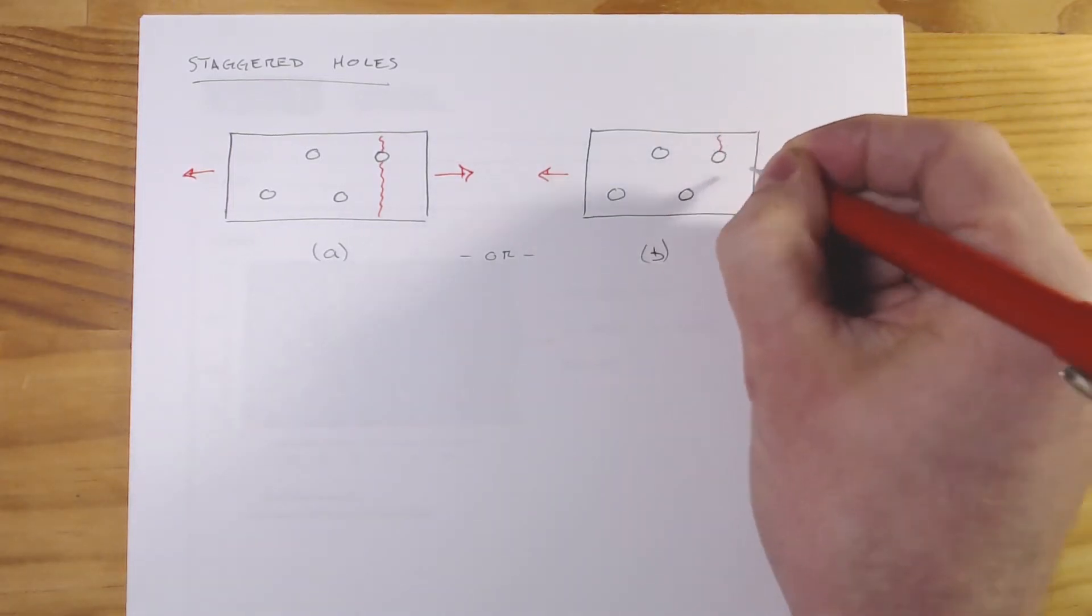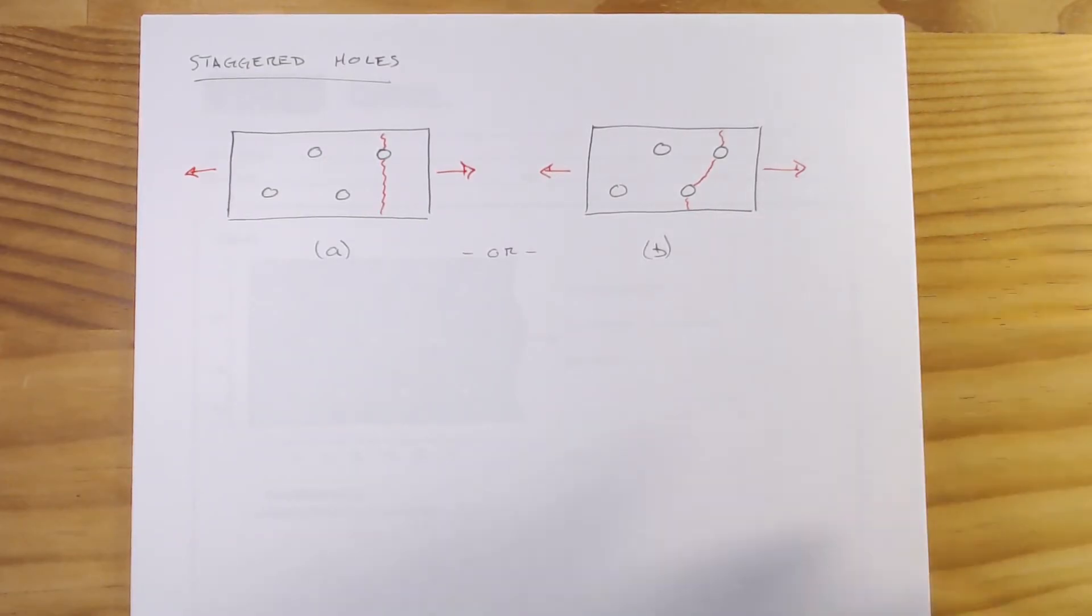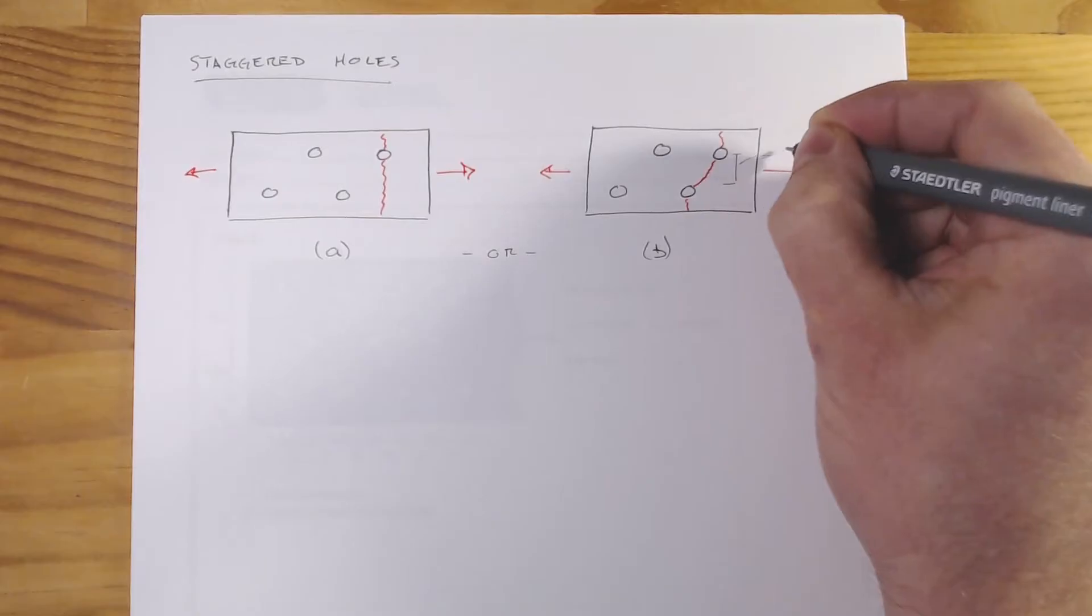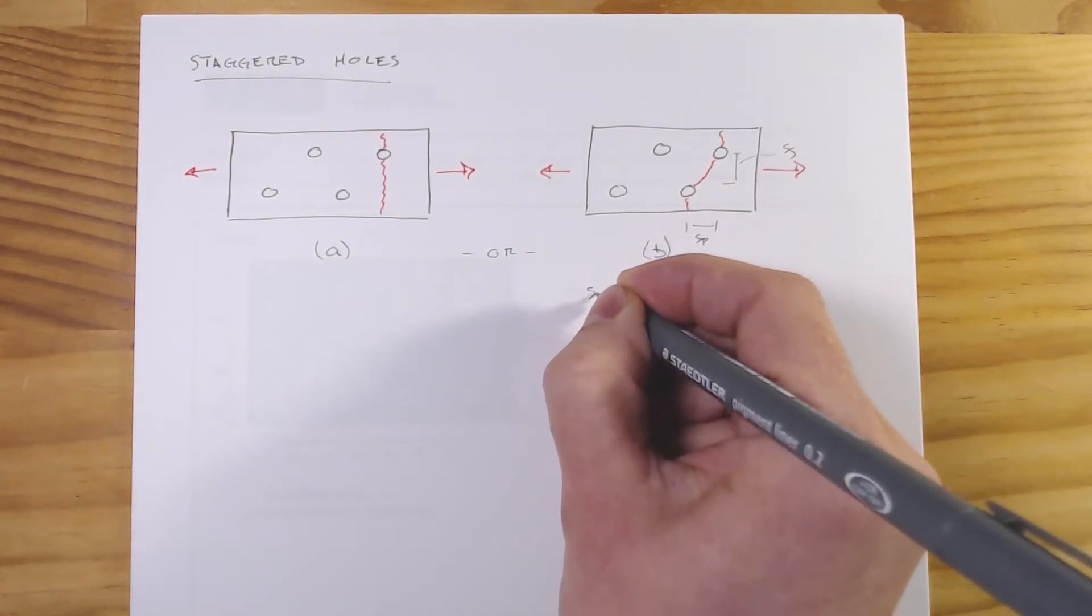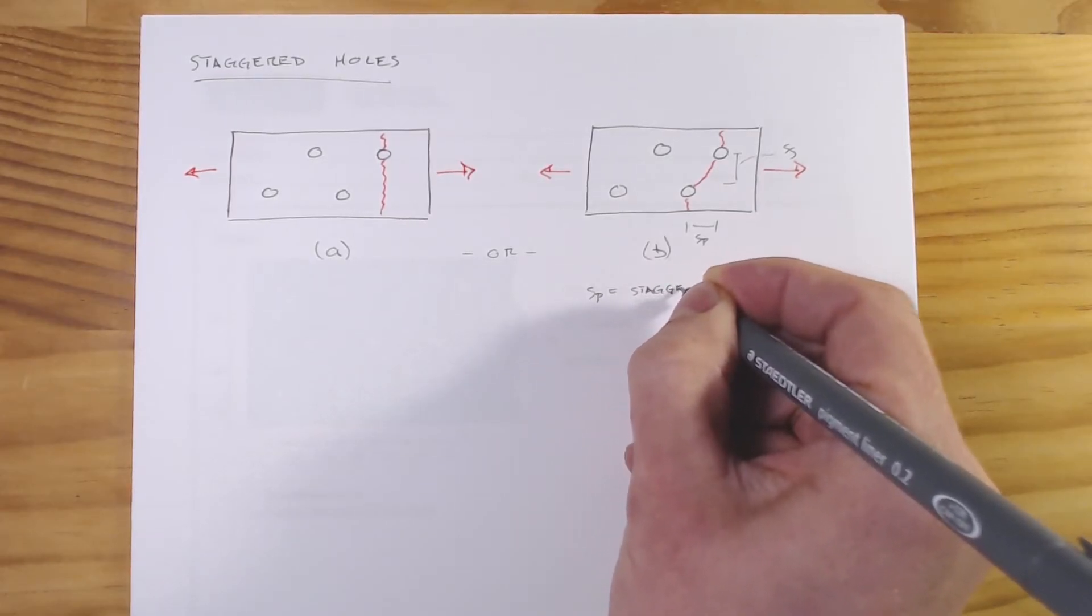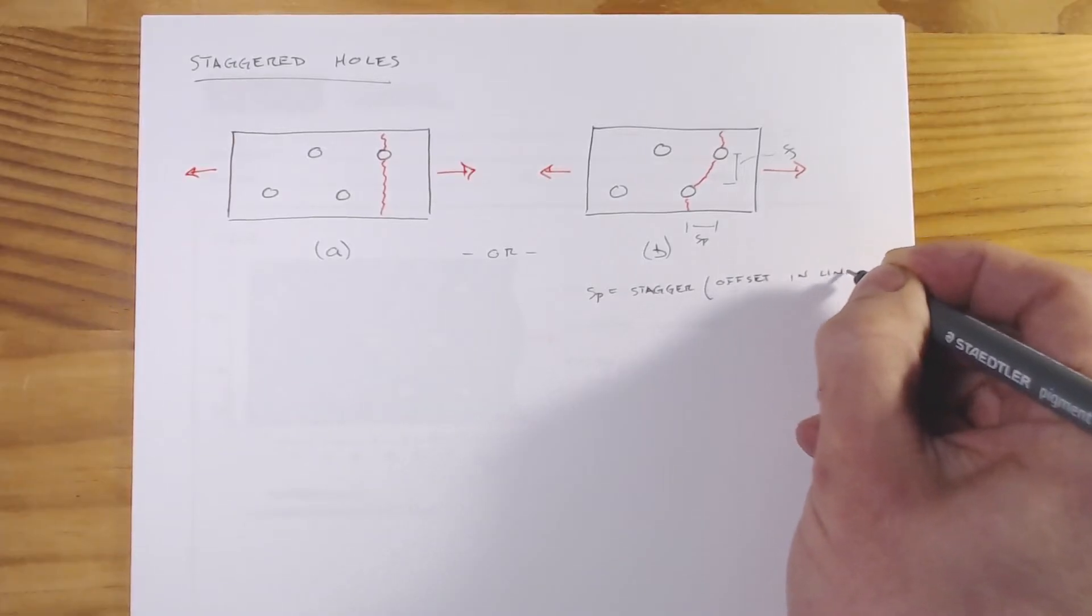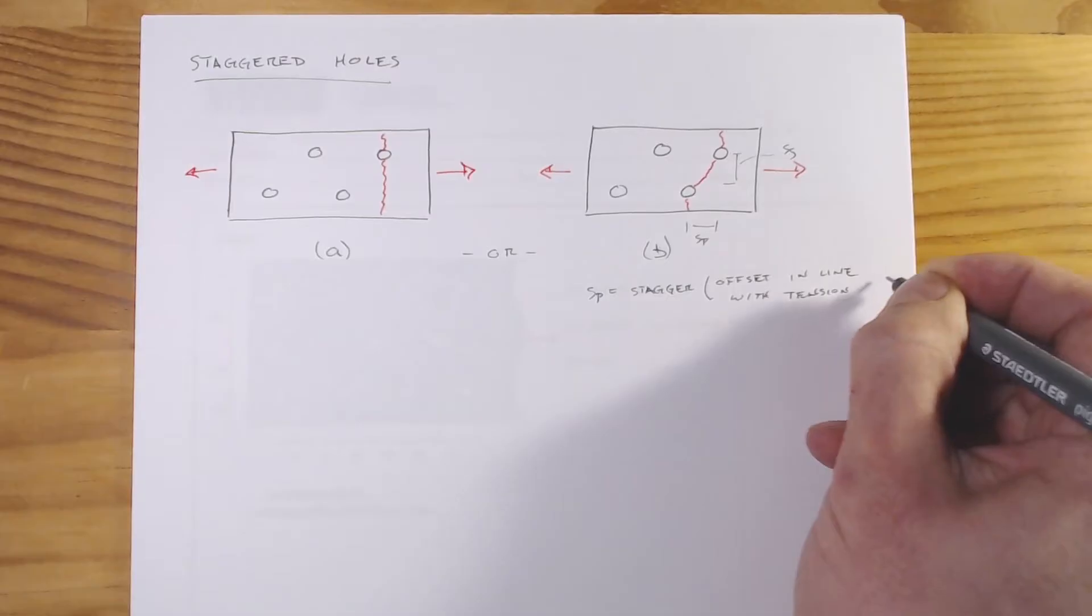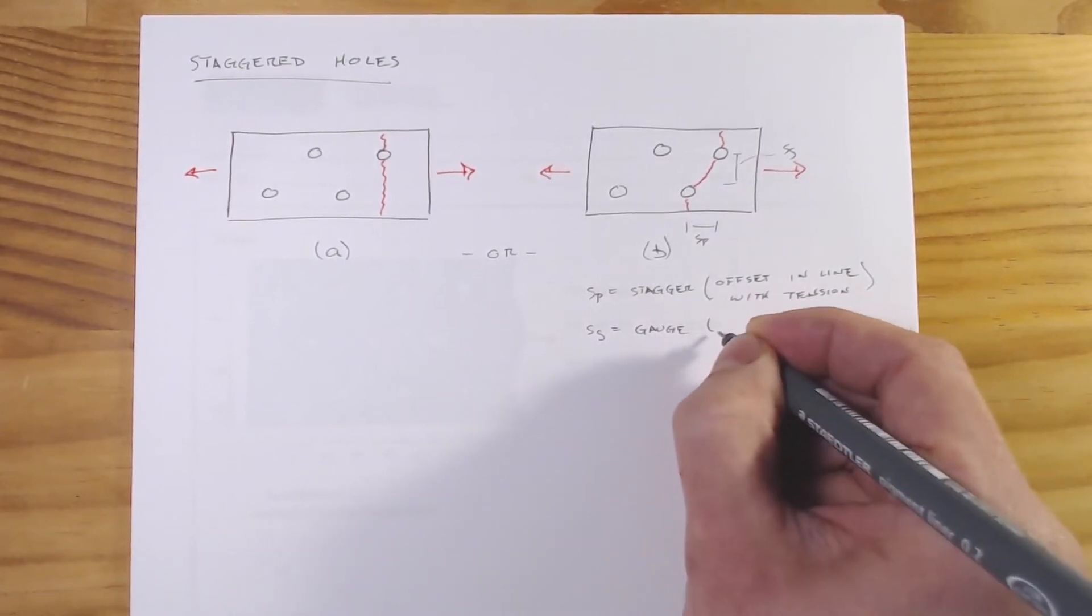Now for case B, we could potentially look at a different case where it's going to come down at an angle. Let's give some quick dimensions here where we can call this dimension which is perpendicular to the line SG, and we can call this one SP, where SP is the stagger, so that's going to be the offset in line with pulling, and then SG is what we call the gauge, and that's the offset perpendicular to the tension.